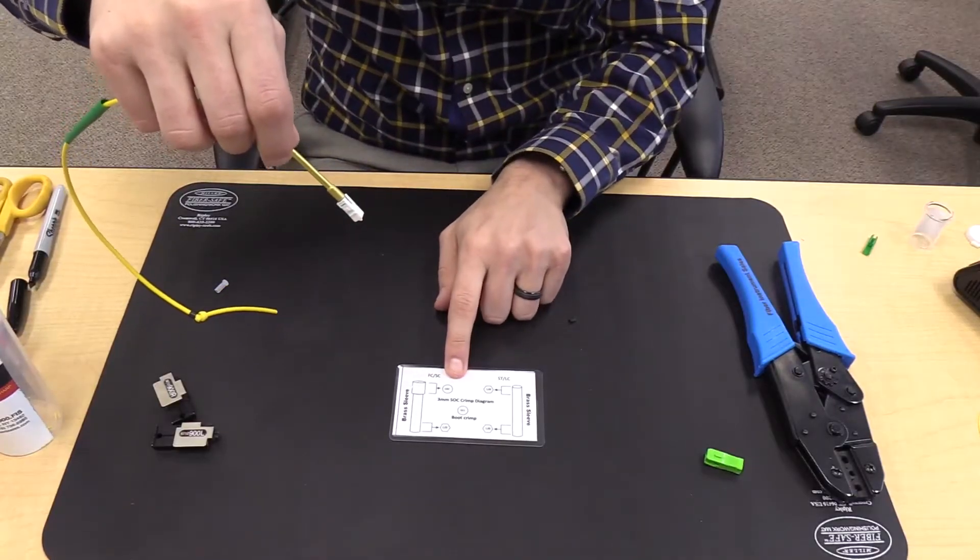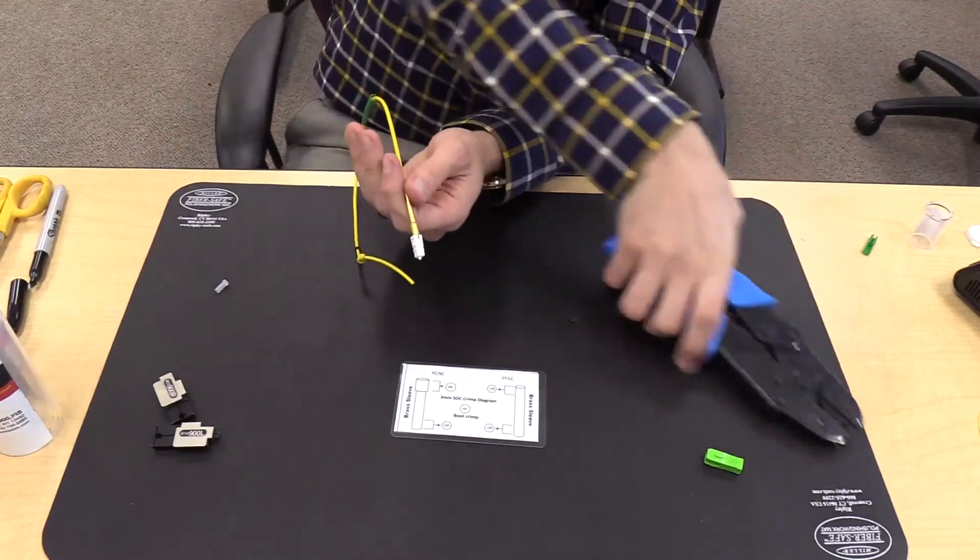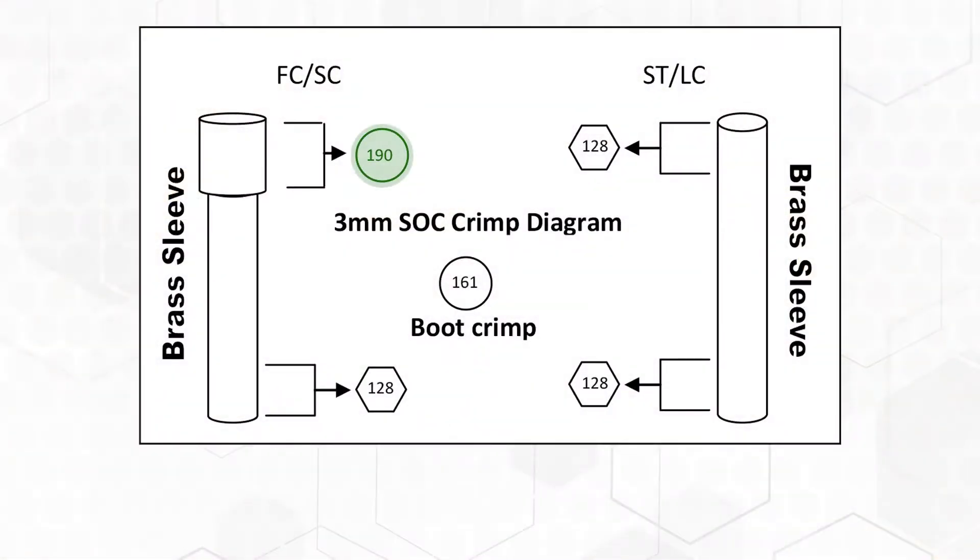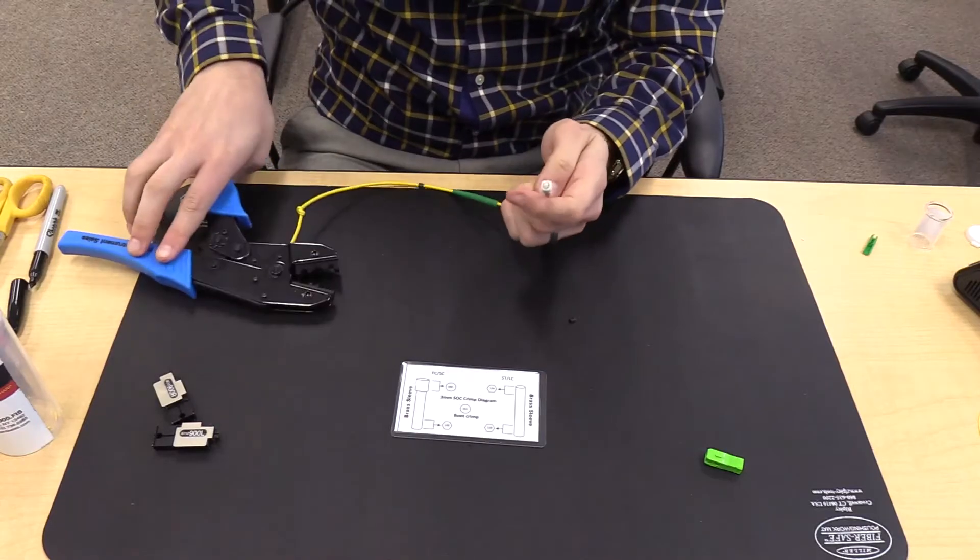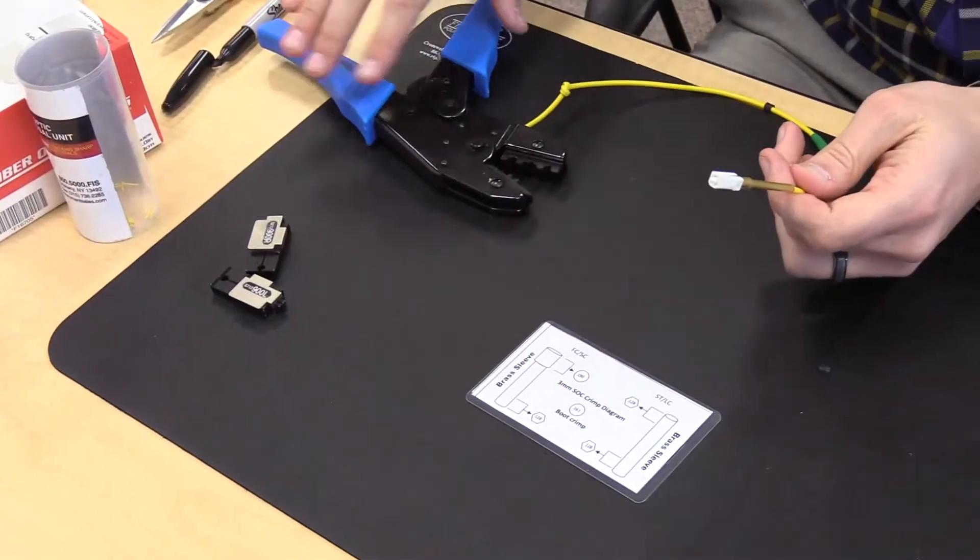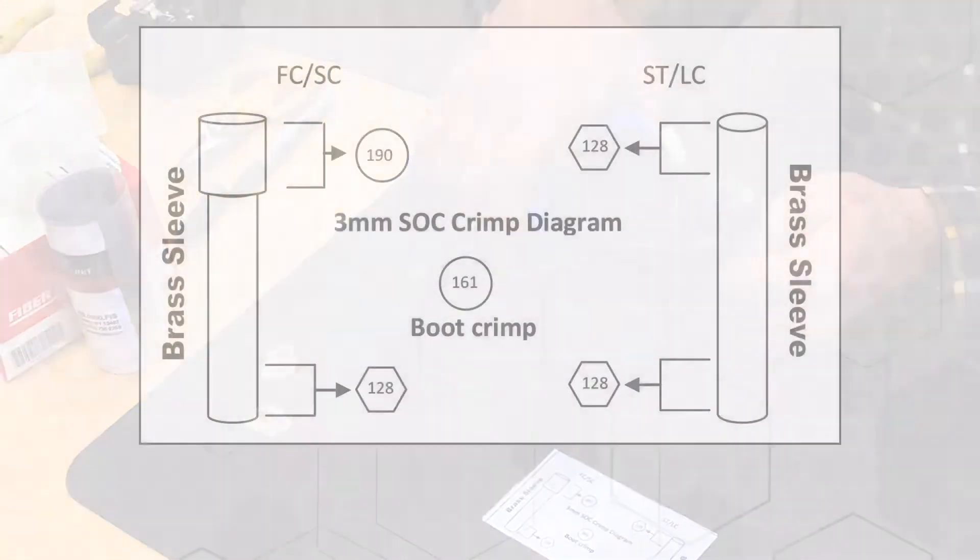On the other side of the strip chart is the crimp ring diagram. Since this termination is a SC connector, crimp the top using the 190-round. Down below, crimp by using the 128-hex.